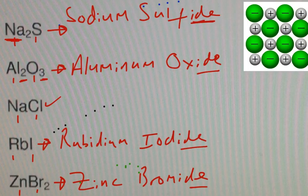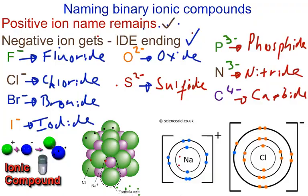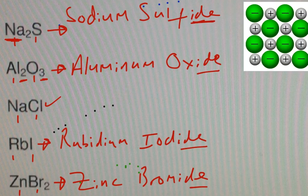As always, hard work plus sacrifice equals success. Know your rules for naming. Know your endings for binary compounds. You look at these guys carefully. If you're given a formula and ask for the name, your metal ions stay as is. Your non-metal ions will get an I-D-E ending.